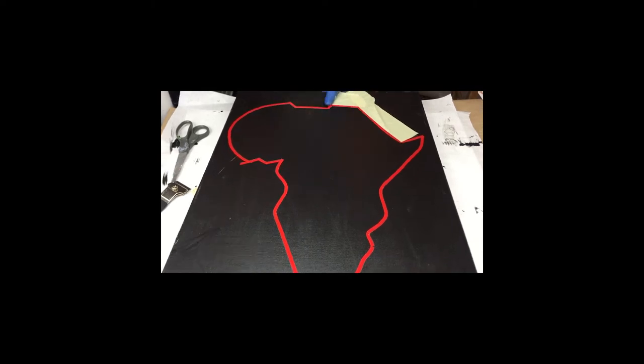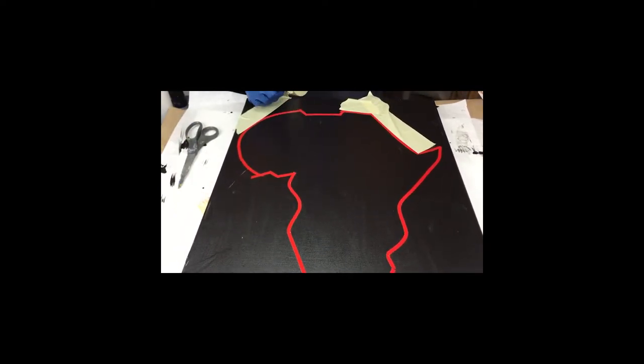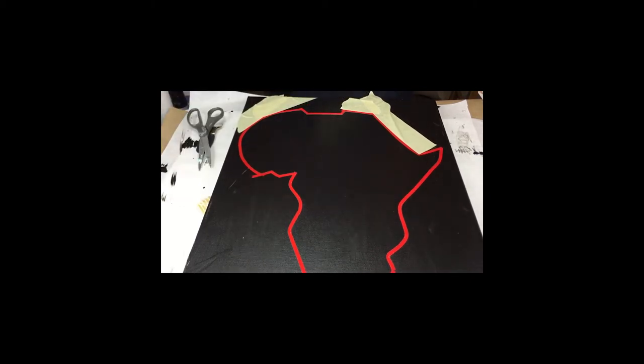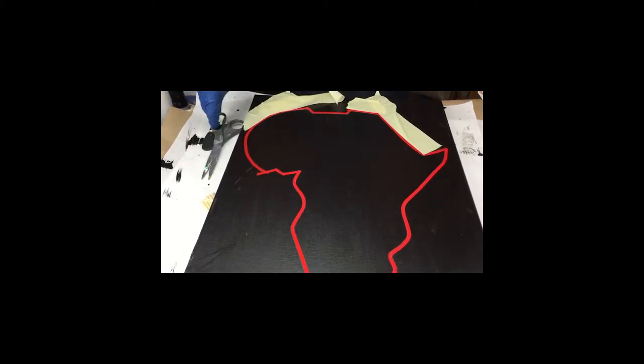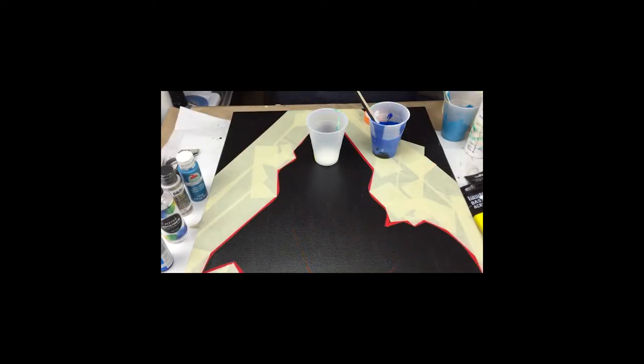Mask and tape around it so the paint doesn't touch the black. Of course it makes sense. Once the tape is down, tack it down a little more, but not too much so it doesn't take the paint off when you're done with it once it dries.